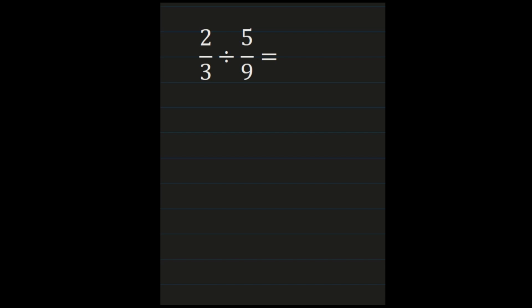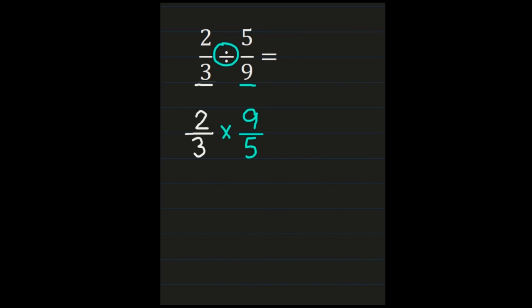Now let's look at 2/3 divided by 5/9. Be sure you're showing all of your work and the steps so that you can see exactly what you're multiplying together. So our first step is the 2/3 — 2/3 stays exactly the same. Then our division sign, we turn into a multiplication sign. So we're going to have 2/3 multiplied by the reciprocal of 5/9, which is 9/5. The denominator becomes our numerator and the numerator becomes our denominator in our reciprocal.